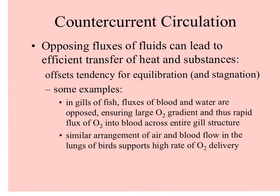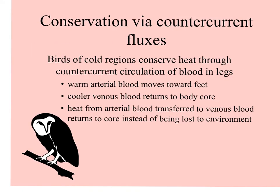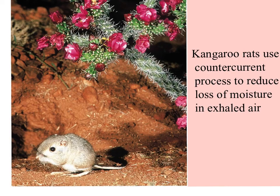A similar arrangement is present in bird lungs, and with their high expenditures for flying, they need a high rate of oxygen delivery. Countercurrent fluxes can help organisms in cold regions conserve heat. The non-feathered legs and feet of birds have warm arterial blood moving toward the feet and cooler venous blood coming back to the body core. This heat transfer inside the body conserves heat inside instead of putting it out to the environment through the feet. Kangaroo rats in the desert use a countercurrent process to keep moisture in their body rather than exhaling it to the dry desert air.